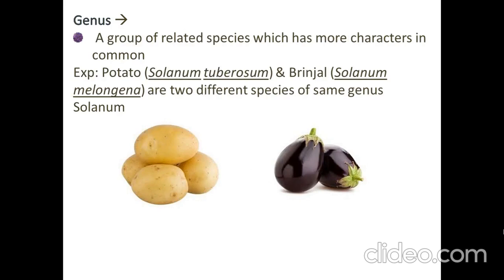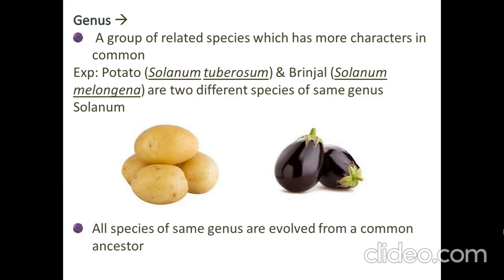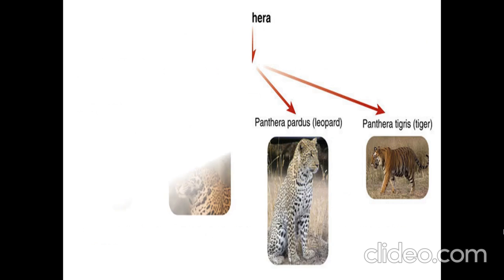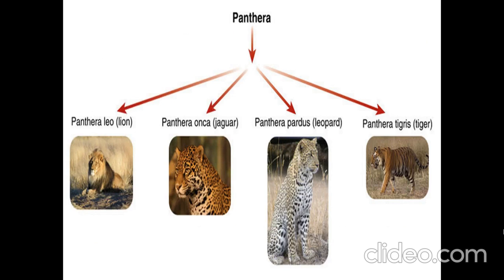Next is genus. Potato, Solanum tuberosum, and brinjal, Solanum melongena, are two different species of the same genus Solanum. They don't look similar, right? But they share a common origin because they belong to the same genus.